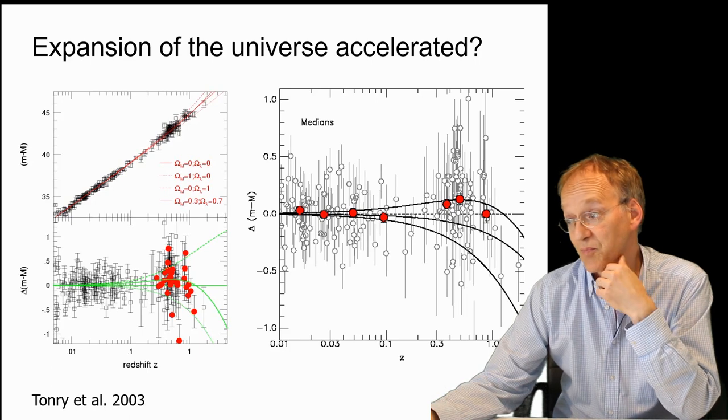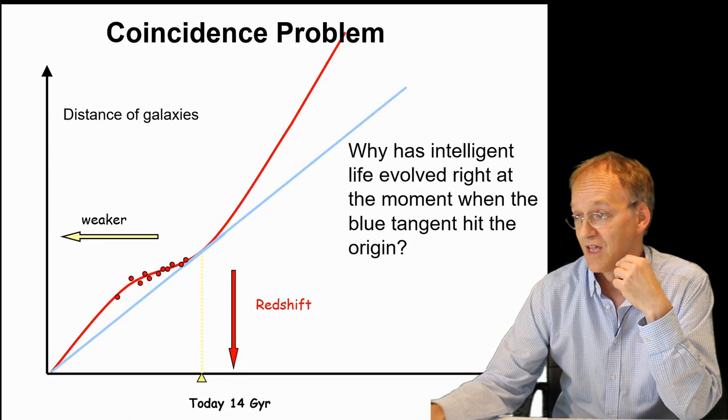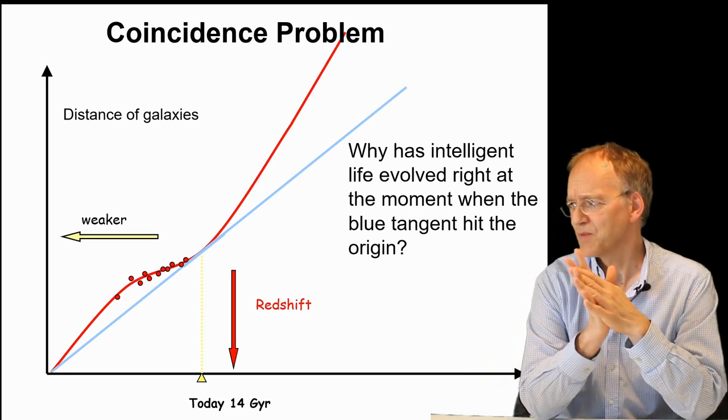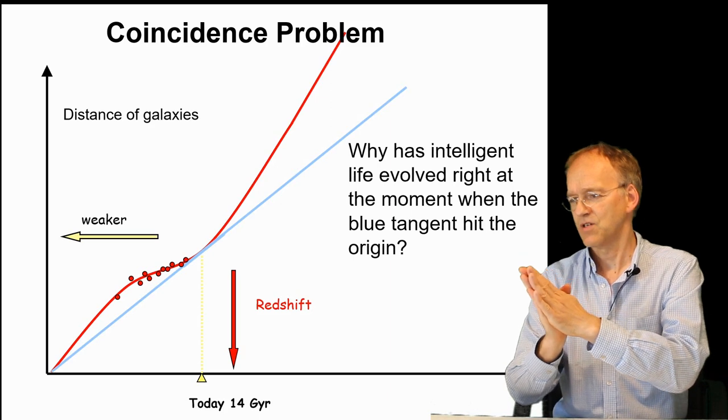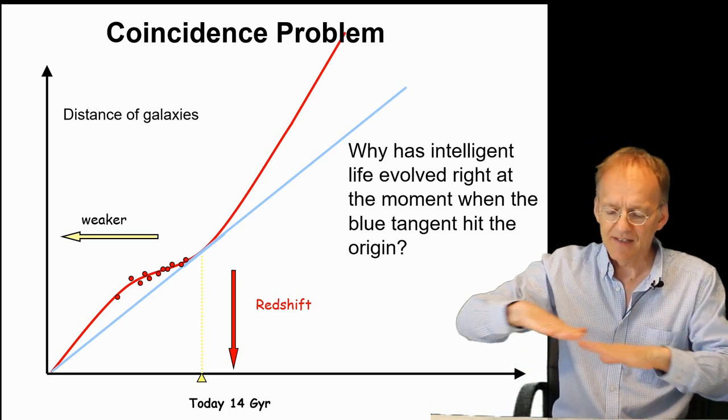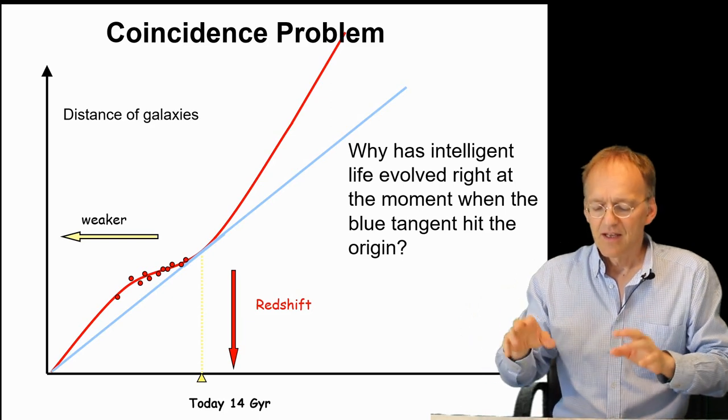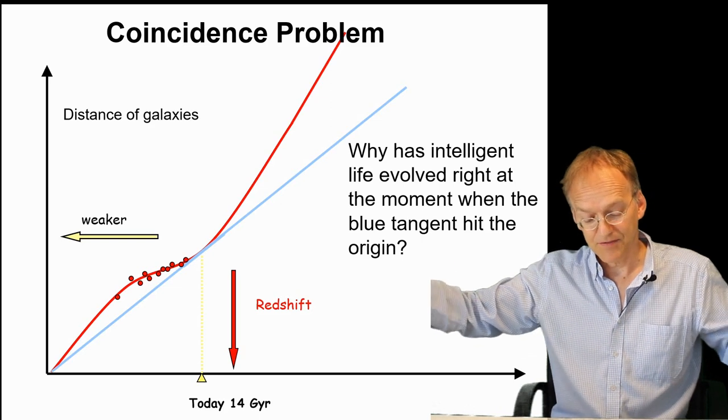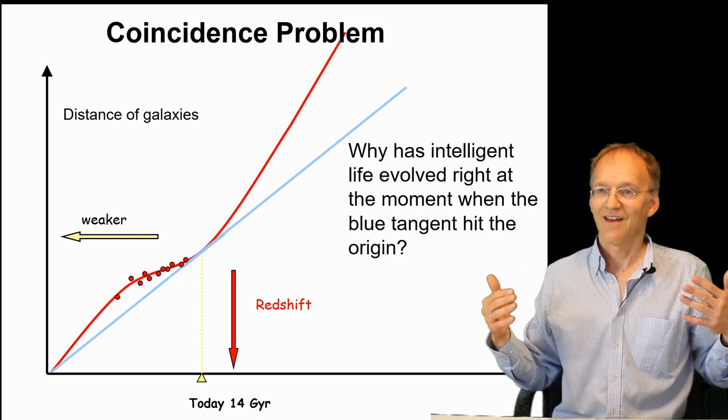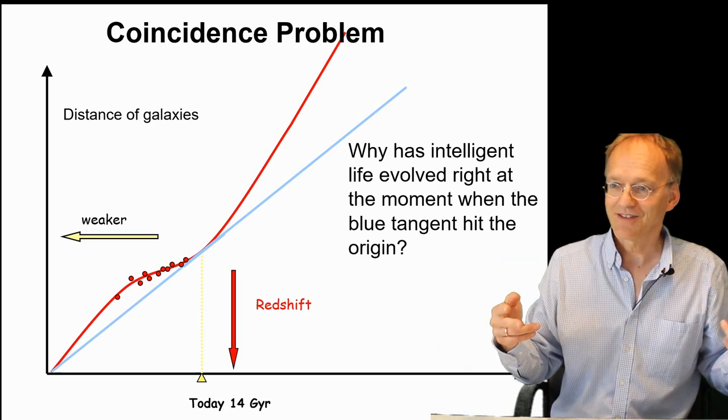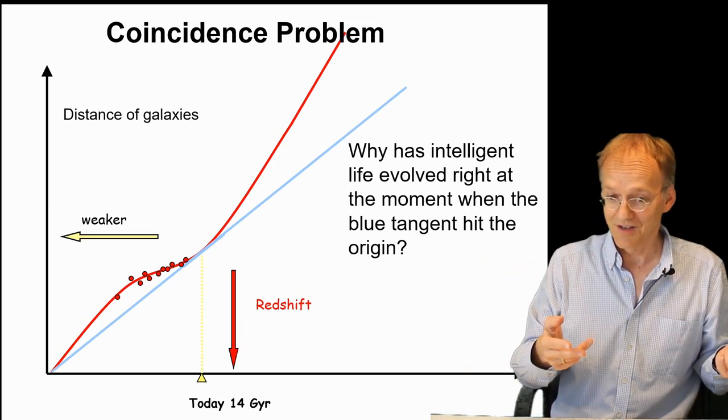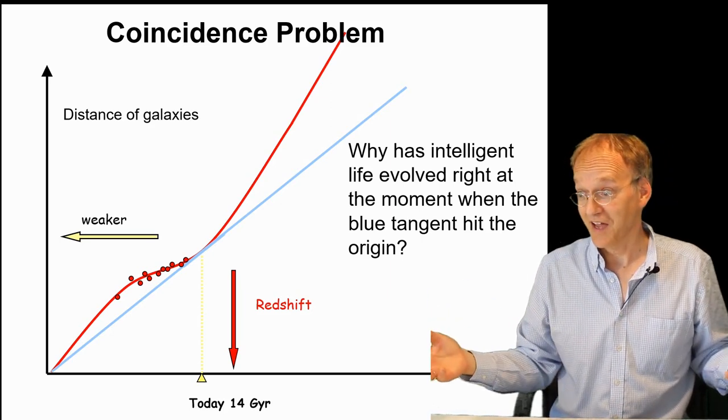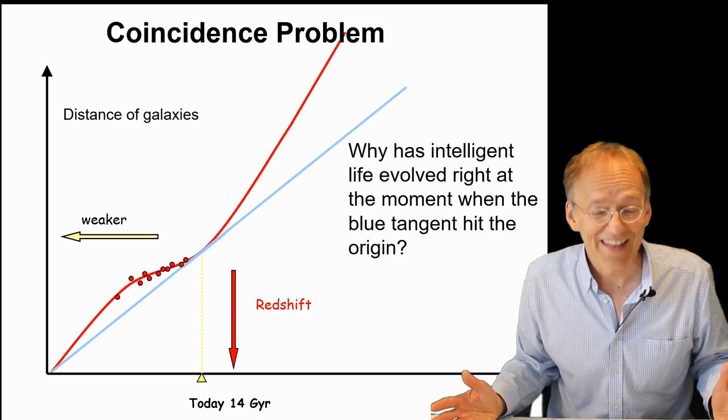And now what to do? If we don't observe the deceleration, there has to be an acceleration that compensates for the non-observed deceleration. But this is not a really good approach. I mean, think first thoroughly before you postulate such complicated mechanisms. And there is another problem that arises. People have noted the coincidence problem. Why has intelligent life evolved right at the moment when the blue tangent hit the origin? That means when the acceleration and deceleration seemingly canceled out over the entire lifespan of the universe.